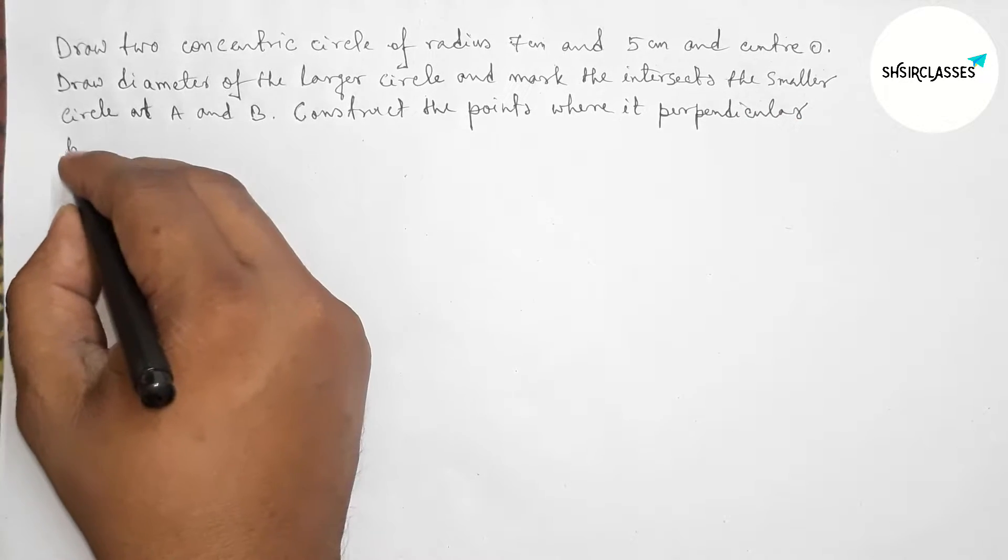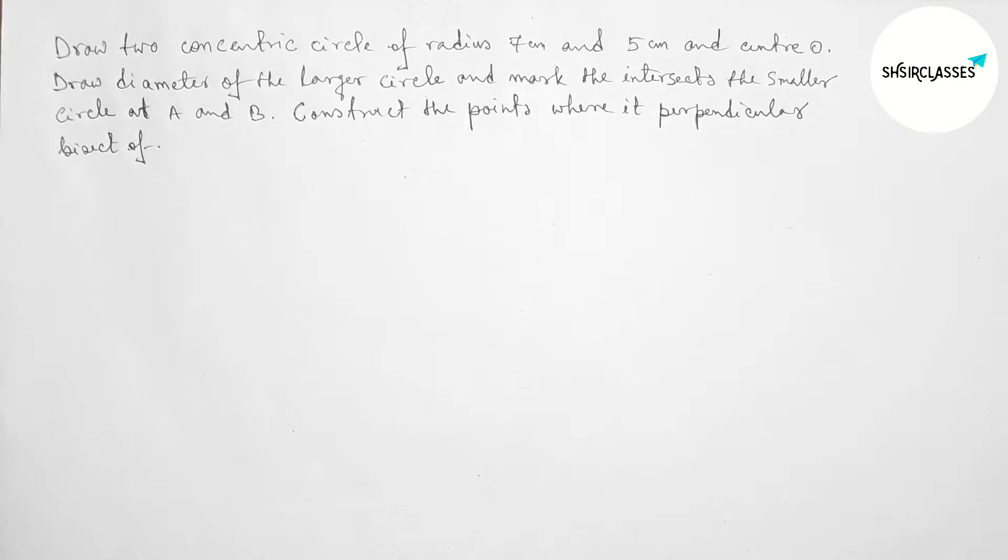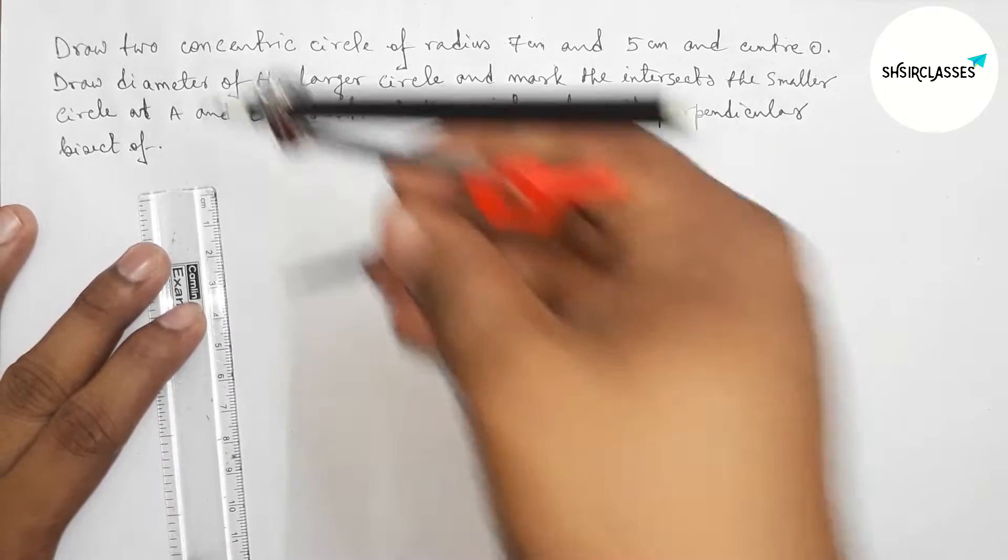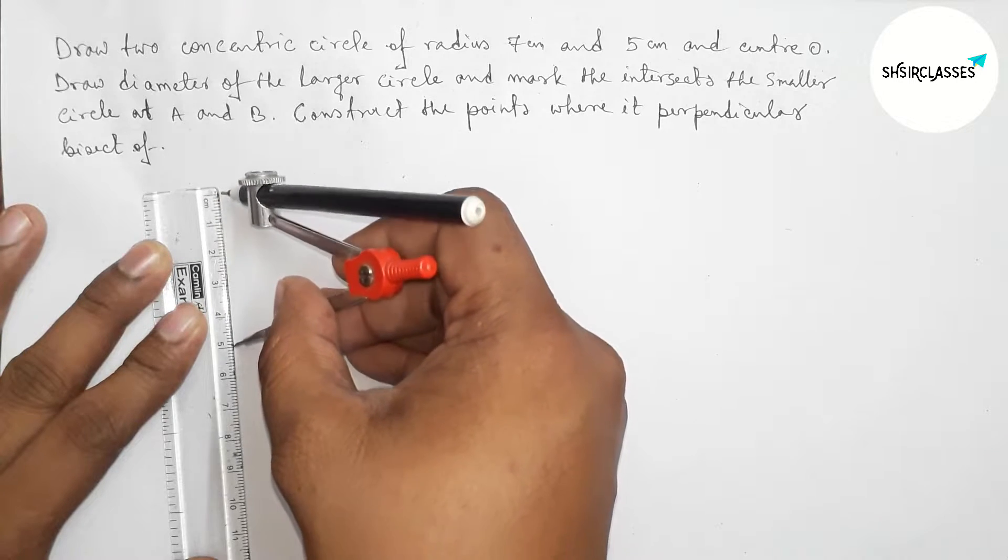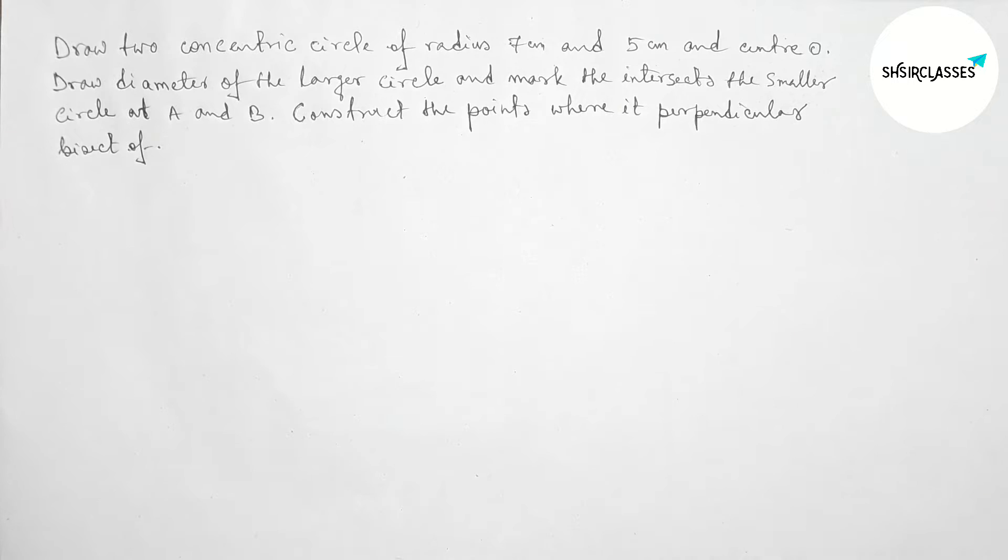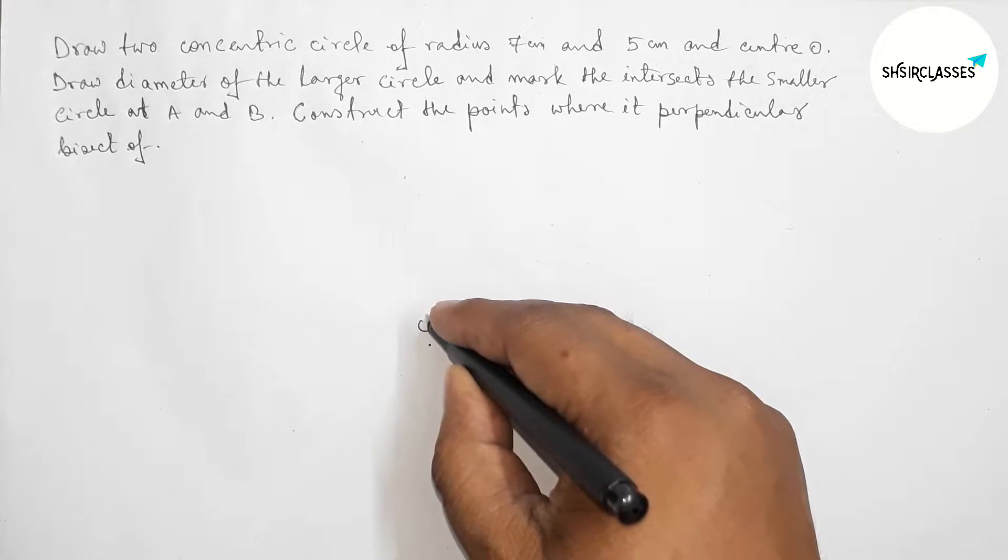The diameter intersects the smaller circle at points A and B. Then we have to find the points where it perpendicularly bisects. So first, taking 5 centimeters with the help of scale and compass. Now taking a point here which is the center.